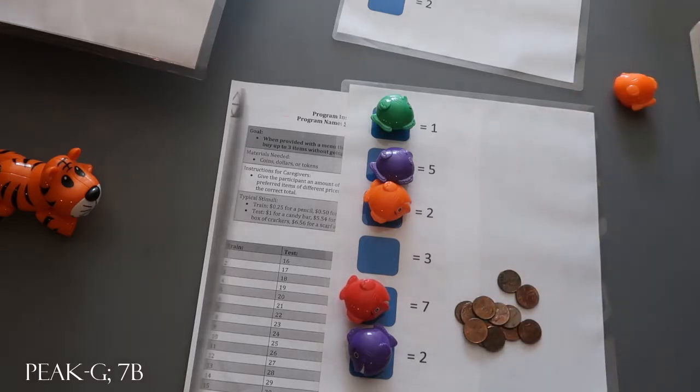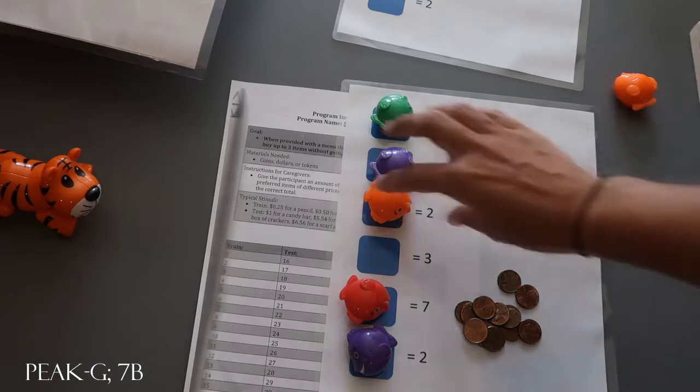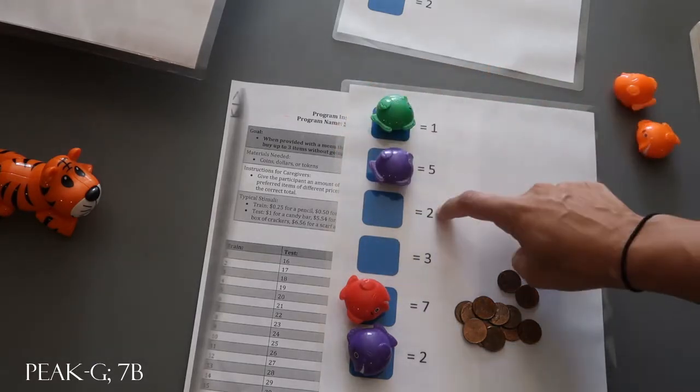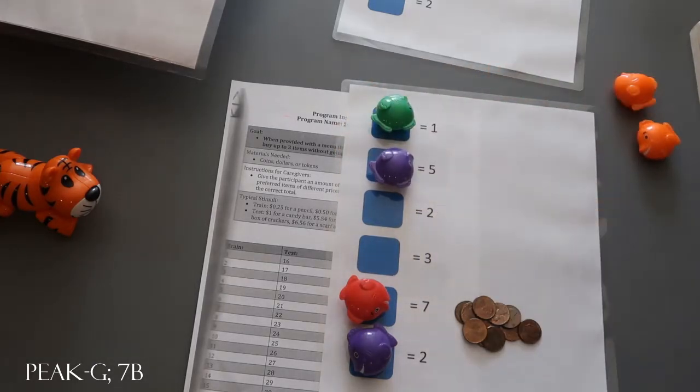We would hold the three pennies. Okay, what fish do you want to buy next? Let's say they pick this one, okay it's this much, and then they would give us two cents. Again, this is the test model, so we would not be able to give any feedback.